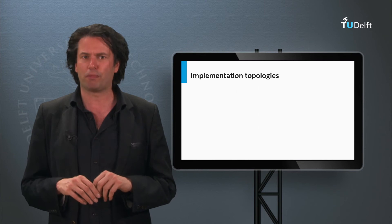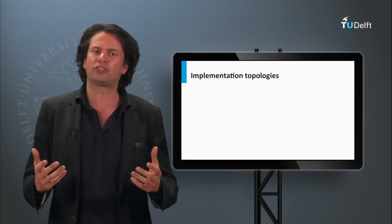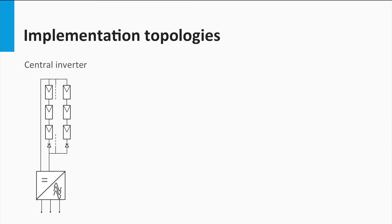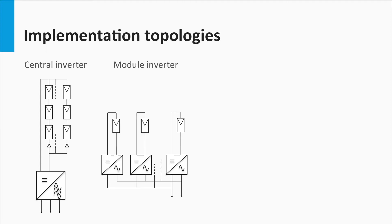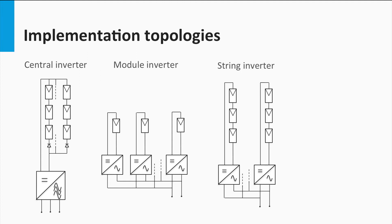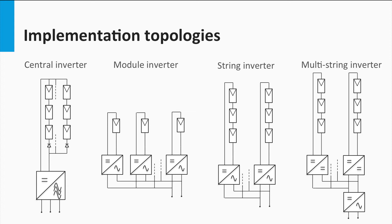Apart from the modes of operation, inverters are also classified on the basis of the implementation topology. There can be four different categories under this classification: central inverters, which are usually in the range of several kW to 100 MW; module inverters or micro-inverters, typically rated around 50 to 500 W; string inverters, typically rated around 500 W to a few kW — a string being the number of PV modules connected in series; and finally, multi-string inverters, typically rated around 1 kW to 10 kW.